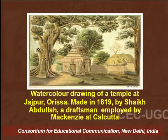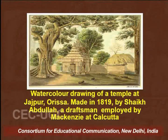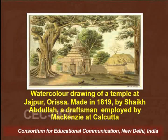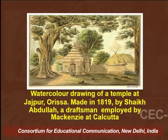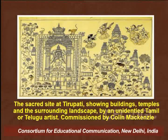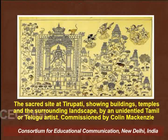This is another visual dated 1819, also made by Sheikh Abdullah, a draftsman employed by Mackenzie. This is a watercolour drawing of a temple at Jajpur in Orissa. You can see the difference of perspective and the minimalistic use of colours. This is the painting of a sacred site at Tirupati which shows buildings, temples as well as the surrounding landscape.